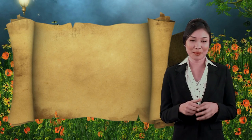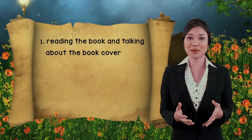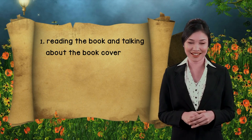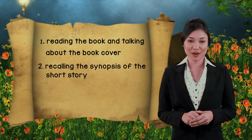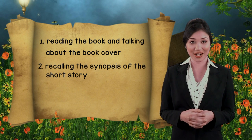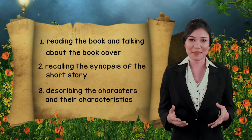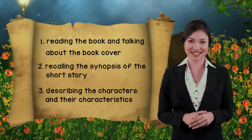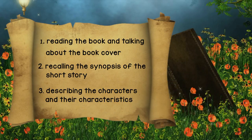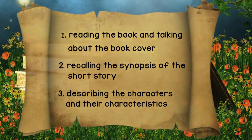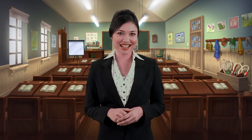The short story I have in mind is The King of Kites by Judith Hennigan and Laura Fournier. In this episode we'll be responding to the literary text by: 1. Reading the book and talking about the book cover. 2. Recalling the synopsis of the short story. 3. Describing the characters and their characteristics. Are you ready? Let's begin.